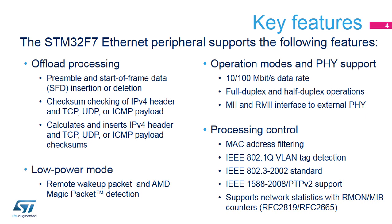The peripheral supports both full and half-duplex modes of operation at either 10 or 100 megabits per second. Auto-negotiation between the peripheral and the external PHY enables automatic configuration of the operation mode. The external PHY is supported through two interface types: the typical media-independent interface, or MII, and the reduced MII that needs half as many pins as the MII.